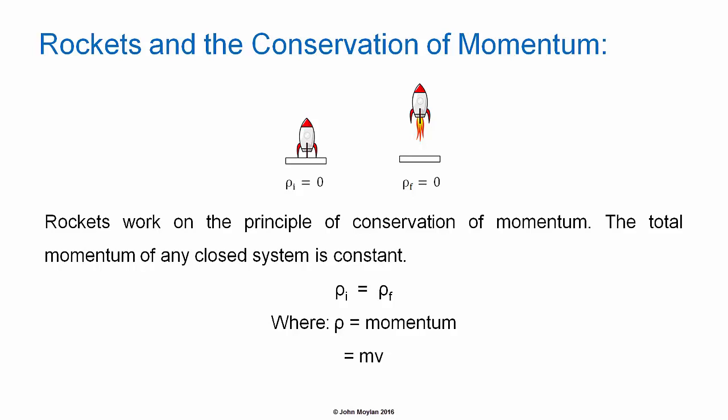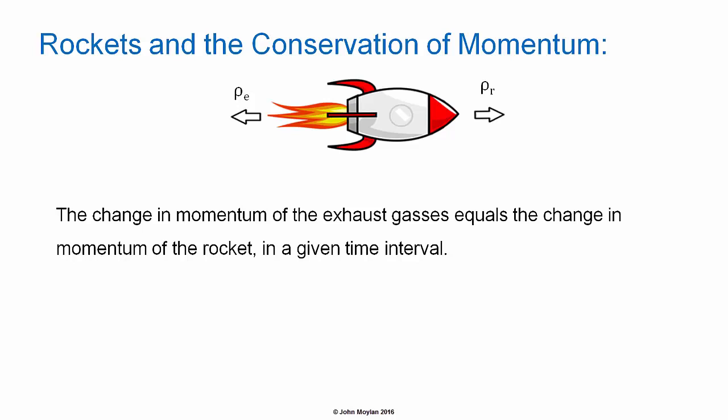Rockets and the conservation of momentum: rockets work on the principle of the conservation of momentum. The total momentum of any closed system is constant. Therefore the initial momentum, rho subscript I, equals the final momentum, rho subscript F, where rho is momentum and equals MV — mass in kilograms multiplied by velocity in meters per second. The change in momentum of the exhaust gases equals the change in momentum of the rocket in a given time interval.